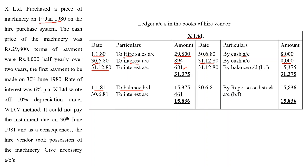In 1981, the third installment was not paid by the buyer. In the installment where payment is not made, we give the interest due entry but no cash received entry. On 30th June 1981, the third installment interest becomes due — write the amount. Cash is not received, so we cannot give a cash entry. Instead, since the higher vendor is taking back the machinery on default, the entire balance is transferred to repossessed stock account.